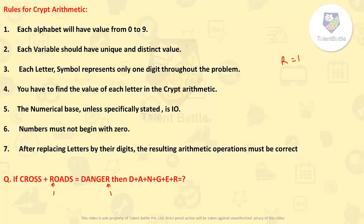The numerical base, unless specifically stated, is 10. The numbers must not begin with 0 — for example, 0789 cannot be a number; 789 is valid as a three-digit number. After replacing the letters by their digits, the resulting arithmetic operation must be correct. Now let's apply these rules while solving the question.